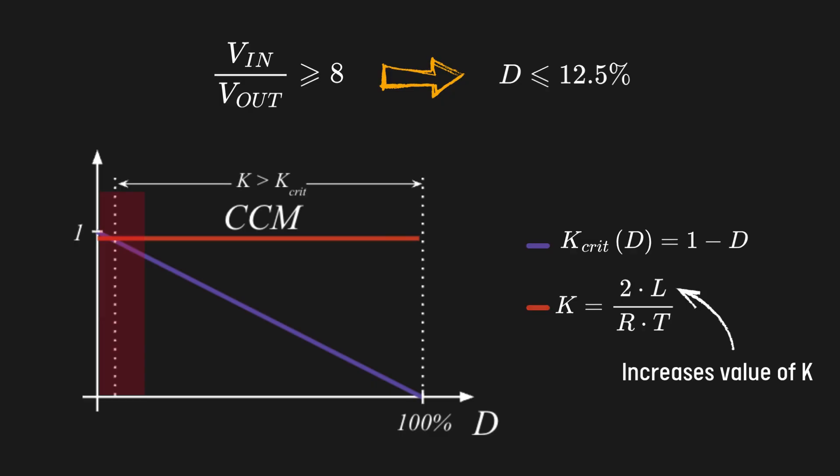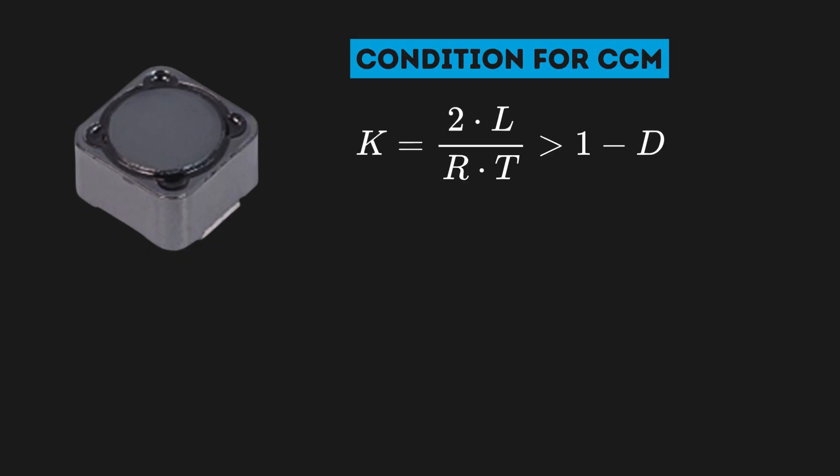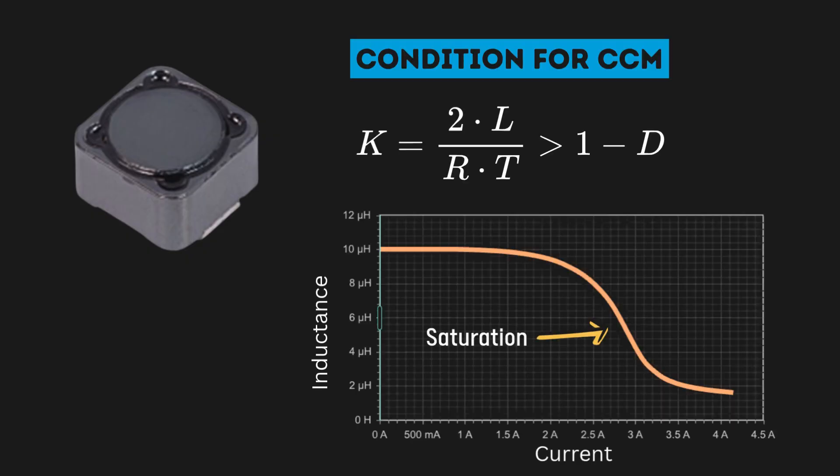In DCM, losses on the MOSFET increase, as current peaks are higher than in CCM for the same output current. To keep CCM, the inductor needs to be rated with a high value and support high currents without reaching saturation, which also increases its overall volume and cost.